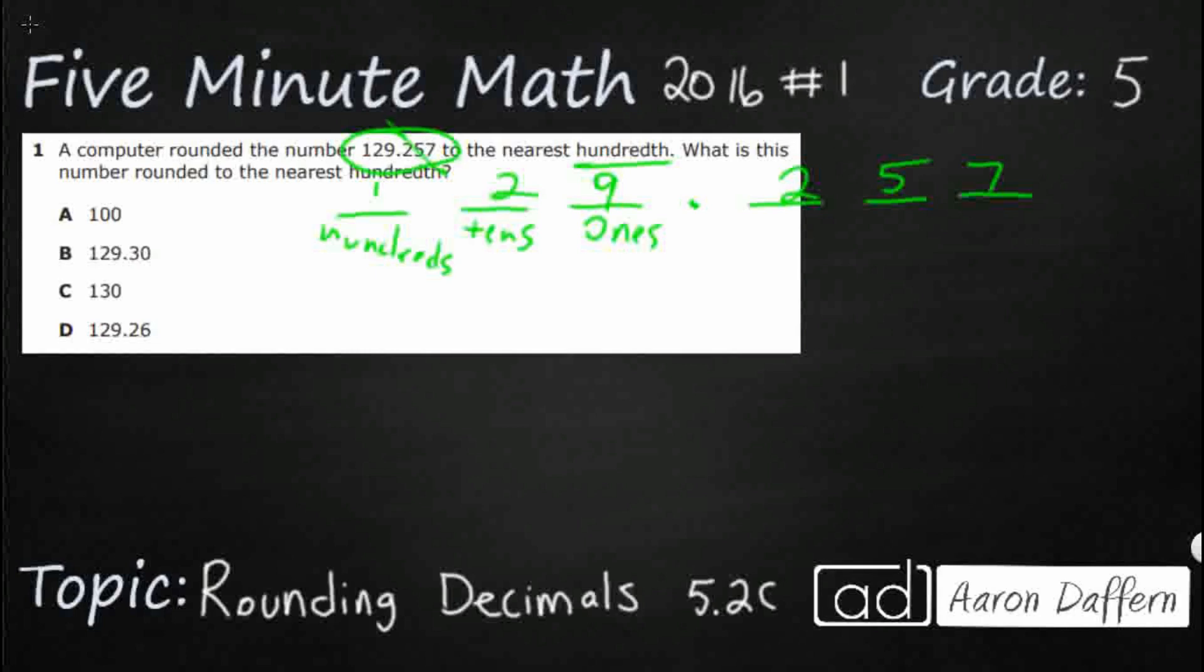Now, to the left of the decimal are the whole numbers. To the right of the decimal are your decimals. So these are values that are smaller than one whole. It starts with tenths, that's T-H-S,